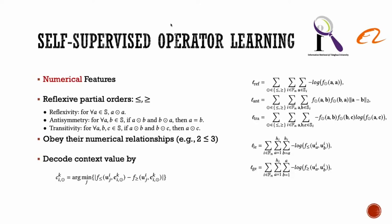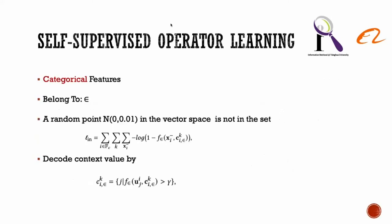The context vector can be decoded via comparing the context vector with feature representation vectors. As for categorical features operator, for the corresponding operator module belong to, we draw some negative samples from normal distribution during training to simulate that a random point in the vector space is not in the set represented by the context value.